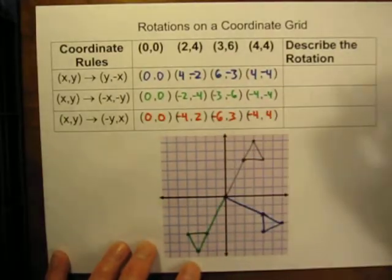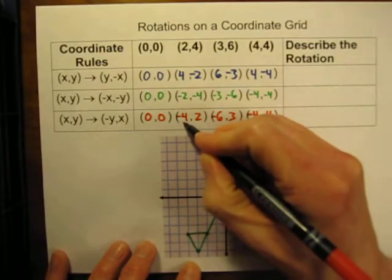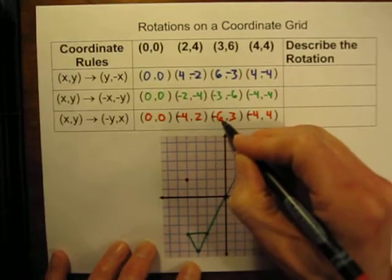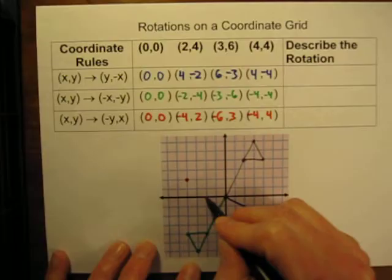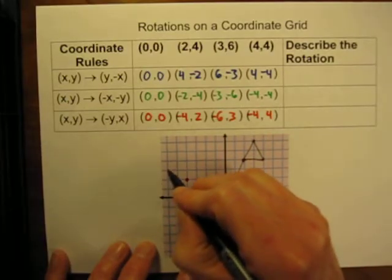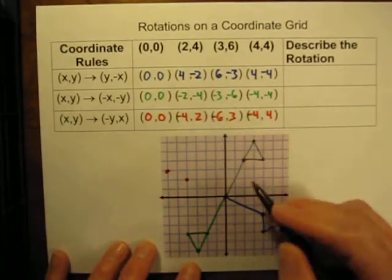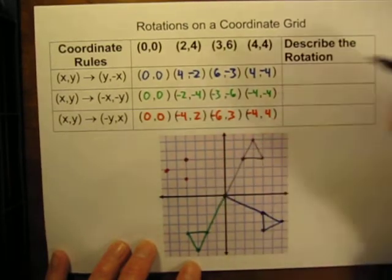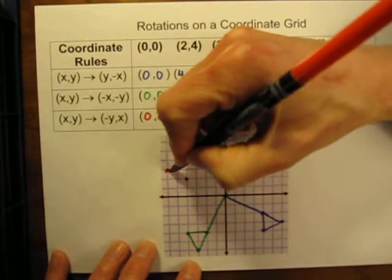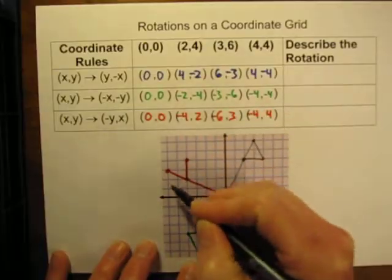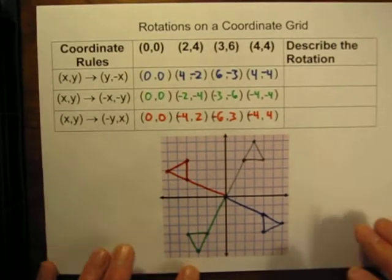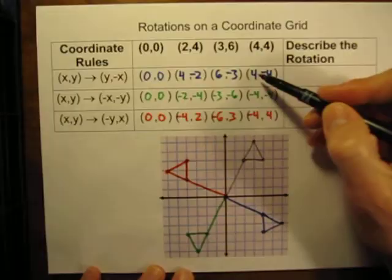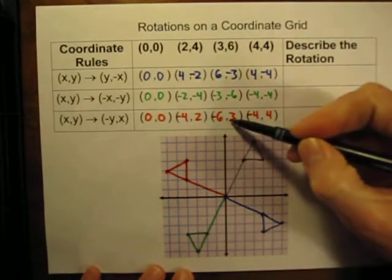Now let's graph this last set of points. (0,0) is at the origin. (-4, 2) is 4 to the left and up 2. (-6, 3) is 6 to the left and up 3. And (-4, 4) is 4 to the left and up 4. There are the new points — let's connect them with lines. And there is the new position of the flag. So we started with our original flag, the first rotation gave us the second flag, the second rotation gave us the third, and the third rotation gave us this final flag.